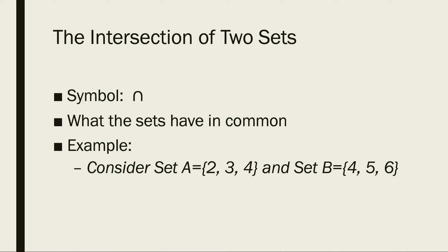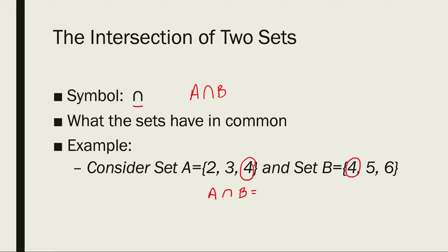For the intersection of two sets, we use a different symbol — the intersection symbol. So A intersect B is the elements that the two sets have in common. Using the same sets A = {2, 3, 4} and B = {4, 5, 6}, we look for elements they share. Both sets have the element 4, so the intersection contains only that element, 4.